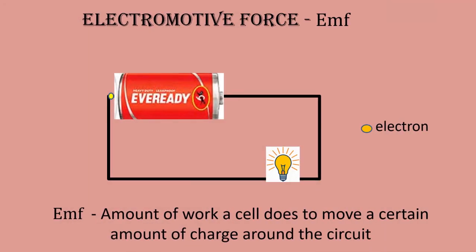A battery or cell is a source of electromotive force or EMF. The term electromotive force does not refer to a force. It is the voltage provided by the battery when no current flows in the external circuit. It is denoted by psi. Its unit is volt. EMF is the amount of work a battery or cell does to move a certain amount of charge around the circuit.